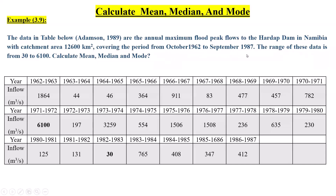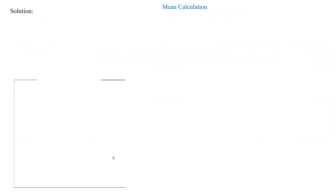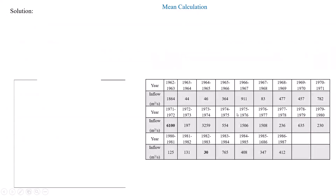The range of this data is from 30 to 6,100 cubic meters per second. Calculate mean, median, and mode. We have 25 data points — the largest is 6,100 and the smallest is 30.